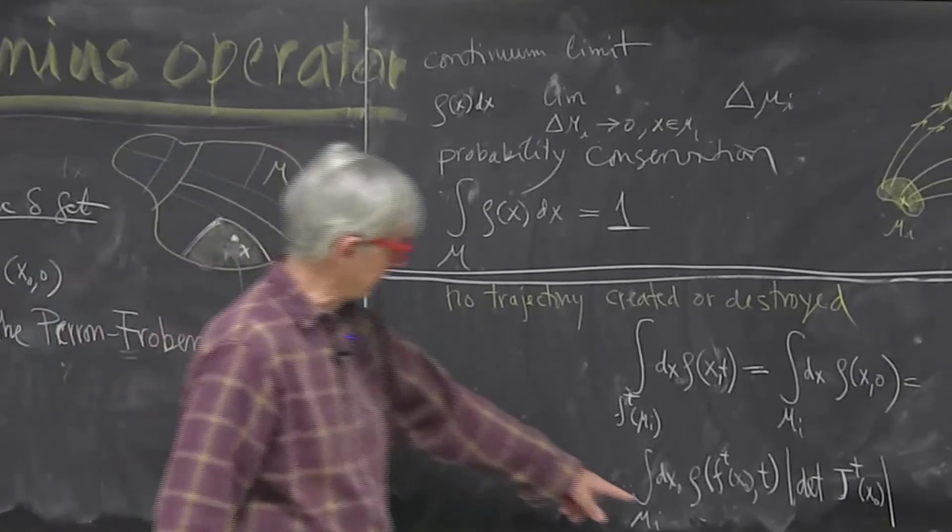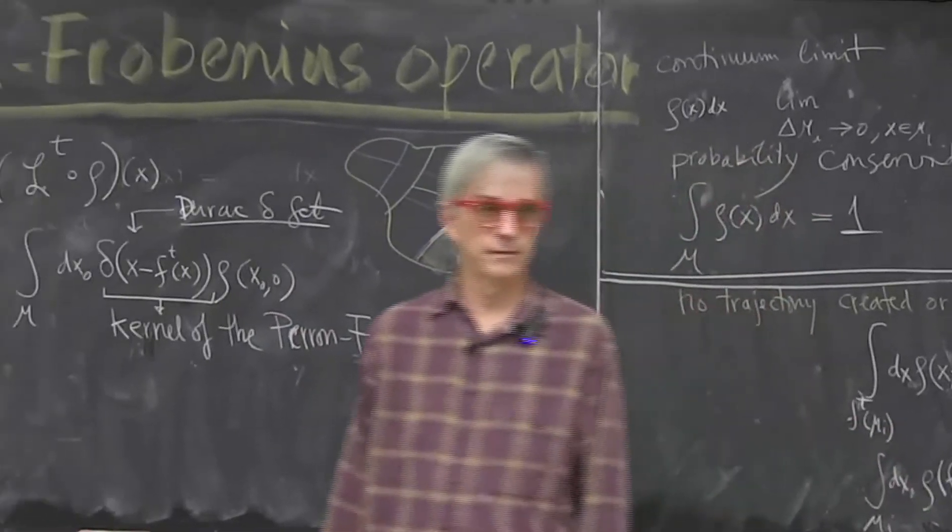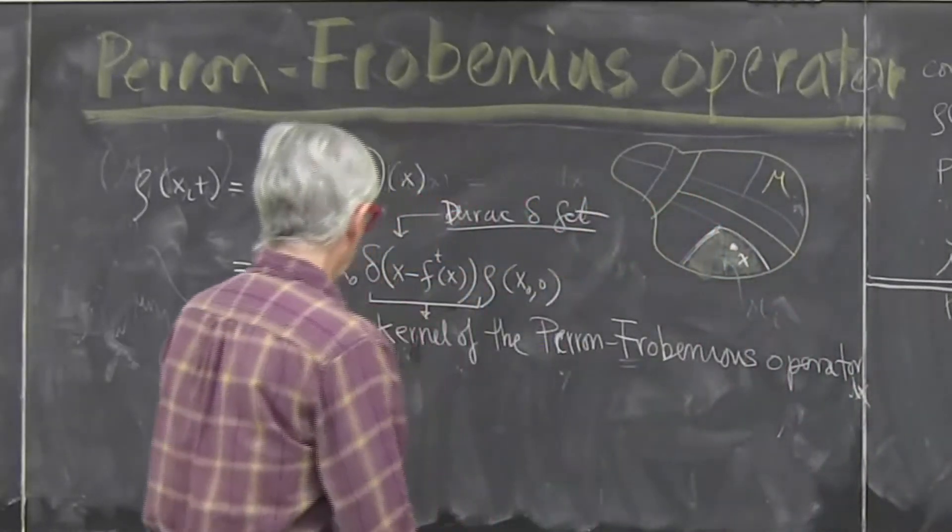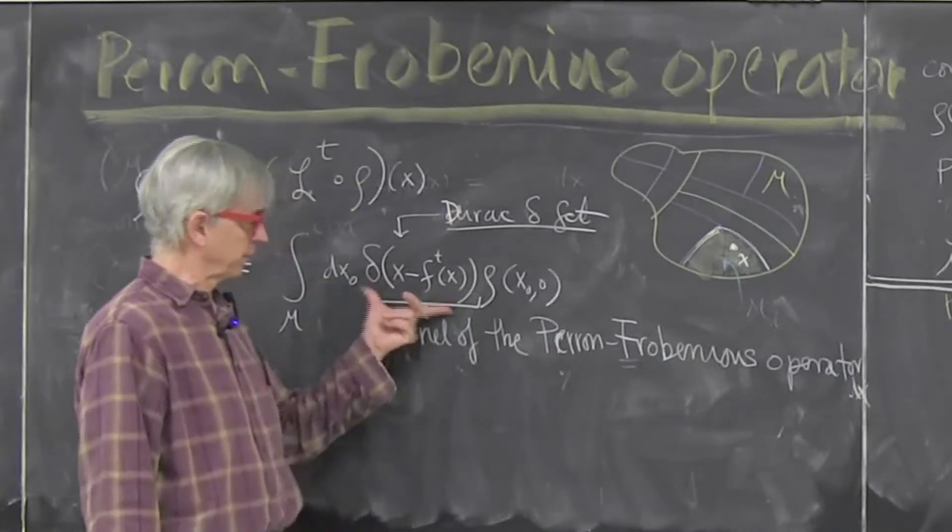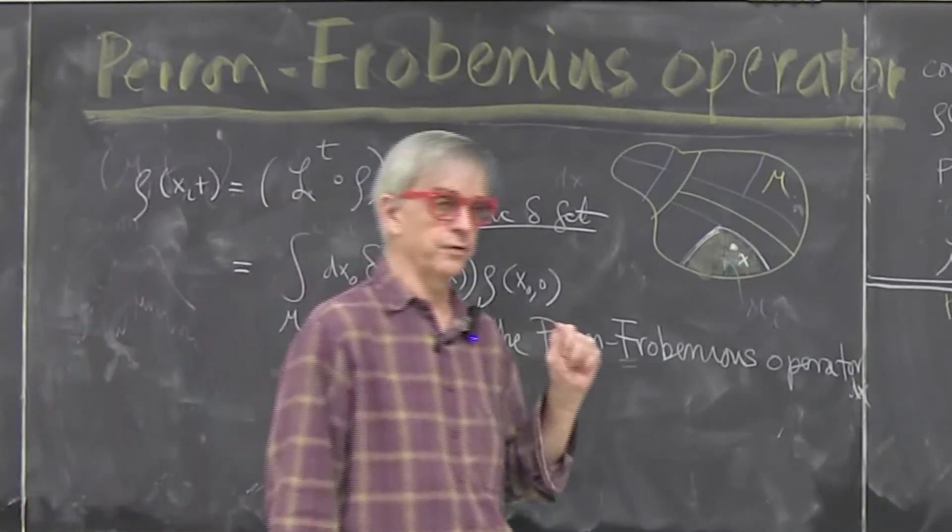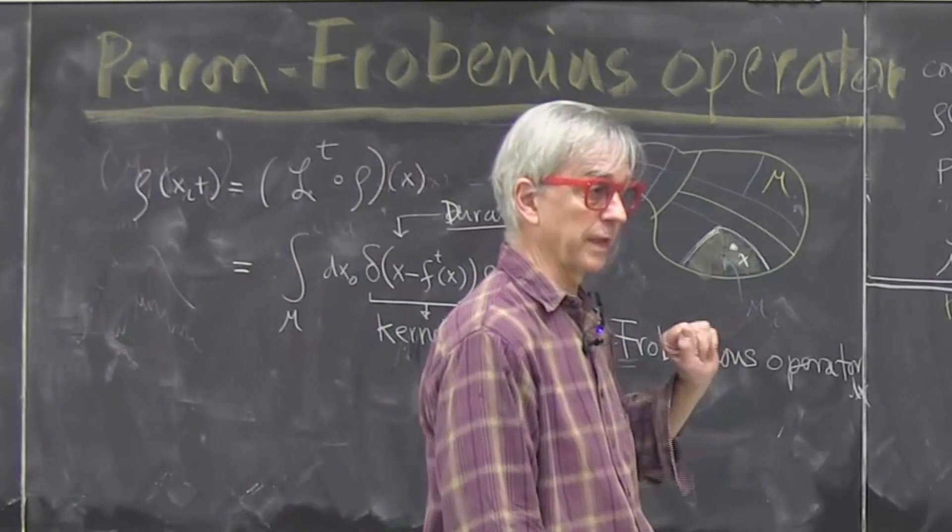They'll never write a Dirac delta function but for us it's convenient to write it because it will provide a very natural bridge both to stochastic and quantum mechanics